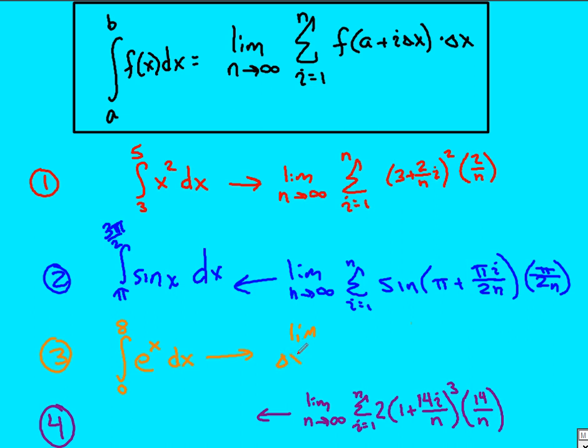So if we look at this one as well, it's going to be, if I go left to right, limit as n approaches infinity, the summation is from one to n.